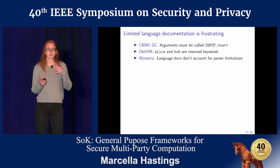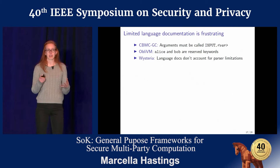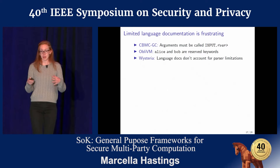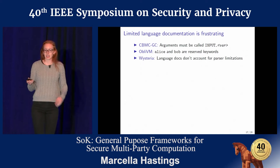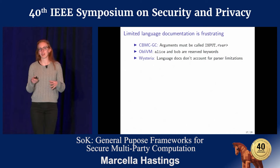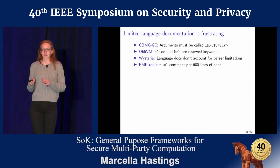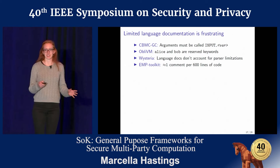Wisteria is an end-to-end framework developed by programming languages researchers, so it uses a novel functional representation. They include an extensive language guide for people who might not be familiar with that functional style. However, the tutorial doesn't account for the limitations in the parser, so a developer has to use a lot more parentheses than the tutorial would imply. And then EMP Toolkit is a framework we really liked using — it's a garbled circuit-based framework — however we found an average of one comment per 600 lines of code with no additional documentation in separate places.